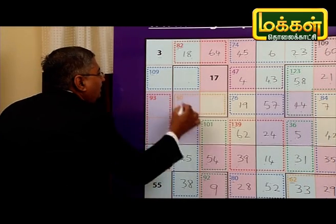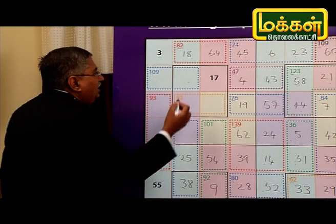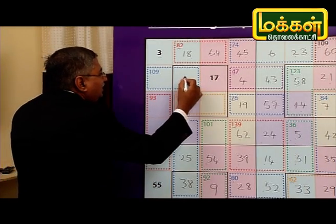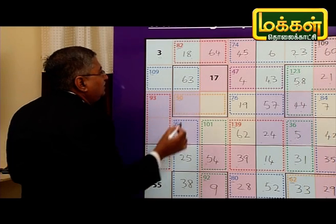If we add this 4 sub square, it's 180. This is 130 minus 30. This is 63. You understand?